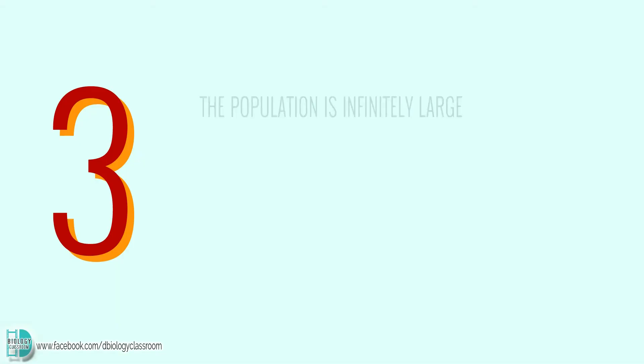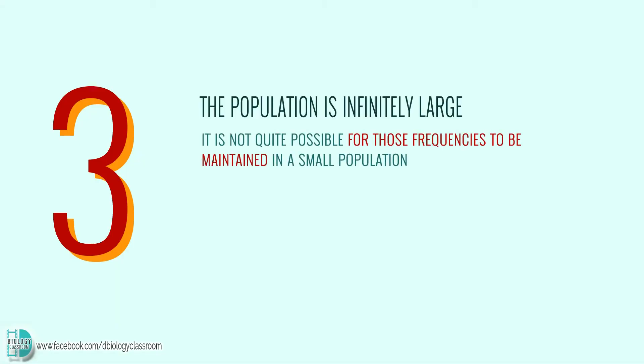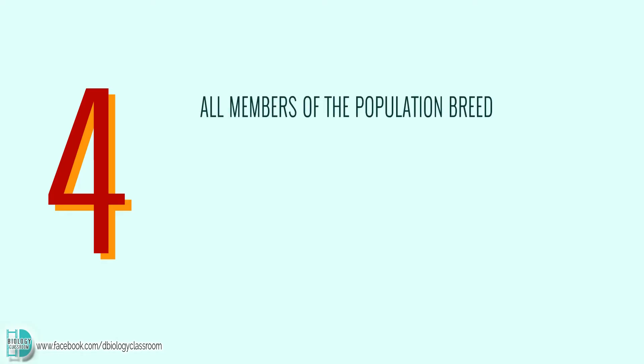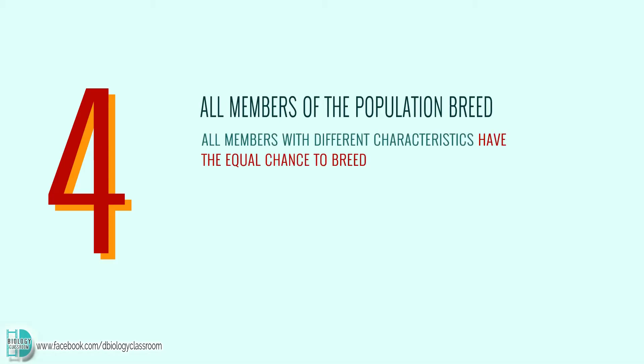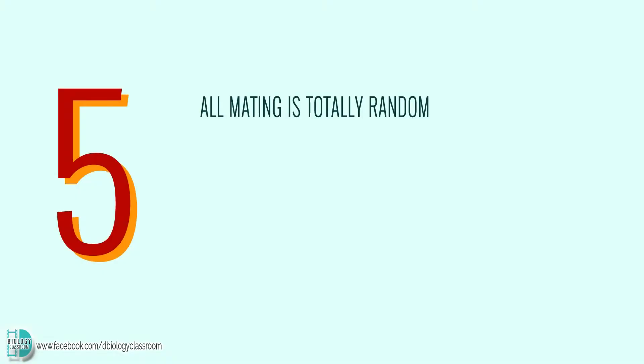Number three, the population is infinitely large — it is not quite possible for those frequencies to be maintained in a small population. Number four, all members of the population breed, meaning all members with different characteristics have an equal chance to breed. Number five, all mating is totally random — there is no favoritism in choosing a mating partner.